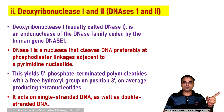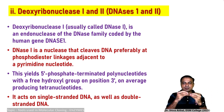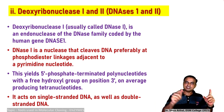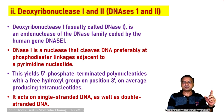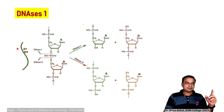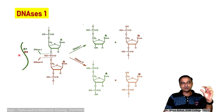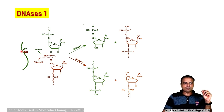DNase 1 yields a 5'-phosphate-containing nucleotide, producing polynucleotides or mononucleotides. It acts on single-stranded as well as double-stranded DNA. In the figure, two adjacent nucleotides — adenine and guanine — are shown. DNase 1 makes a cut at the phosphate bond between them. Depending on where the cut is made, adenine will not contain the phosphate, but guanine will contain the phosphate at its 5' end.